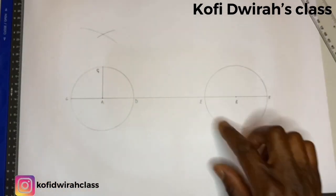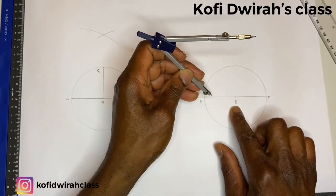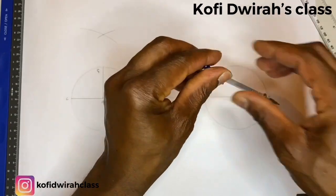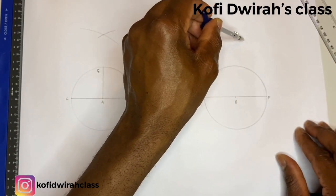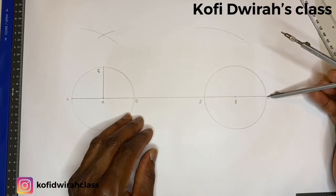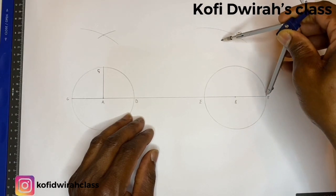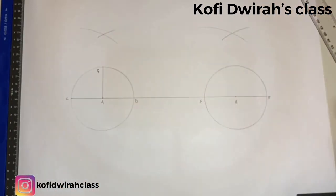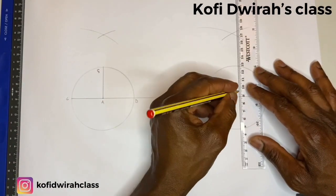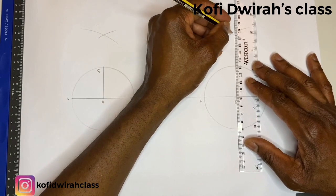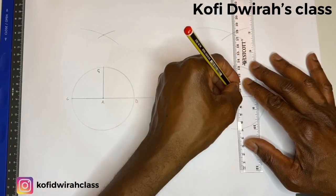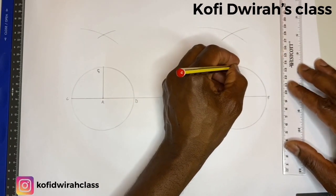Then at the other circle, from E, you draw an arc, then you draw another arc, then you draw another straight line which is the normal from B. There, we have this point to be H.